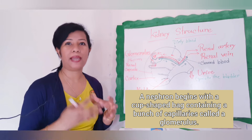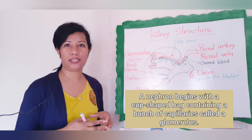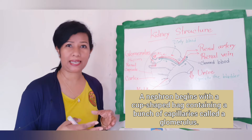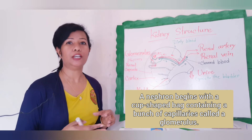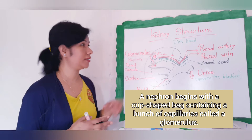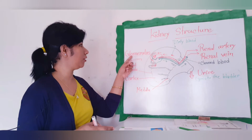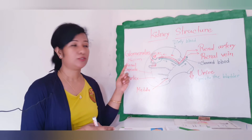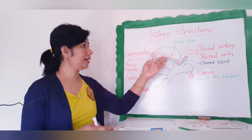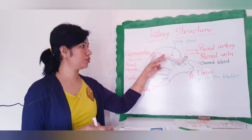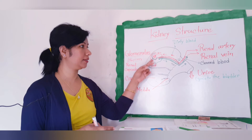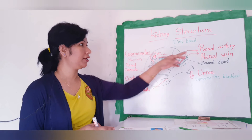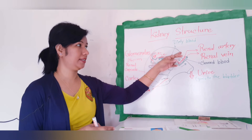The nephron begins with a cup-shaped bag containing a bunch of capillaries. This is called the glomerulus. You must remember that. This is where the dirty blood enters — the renal artery carries dirty blood to the kidney.